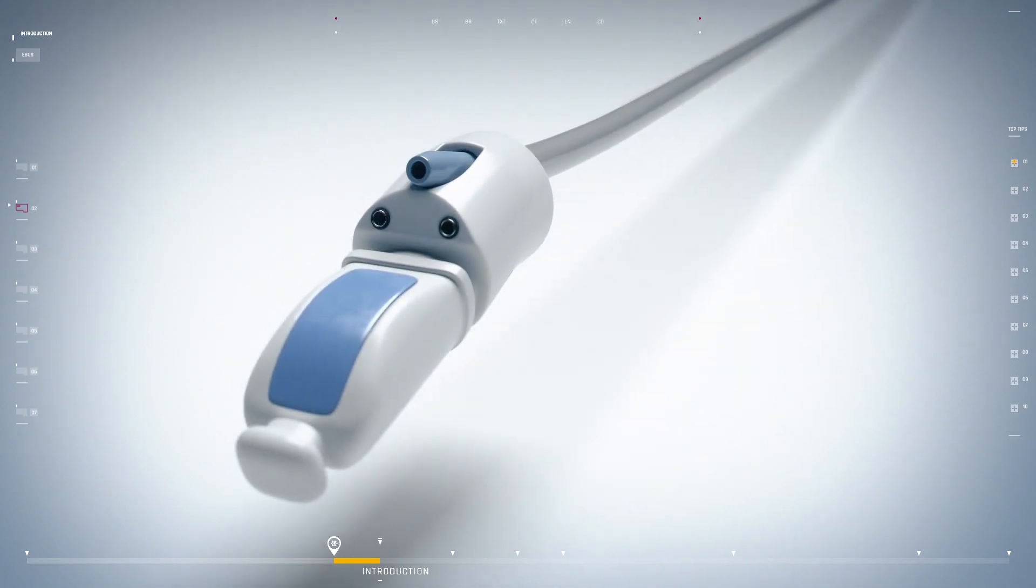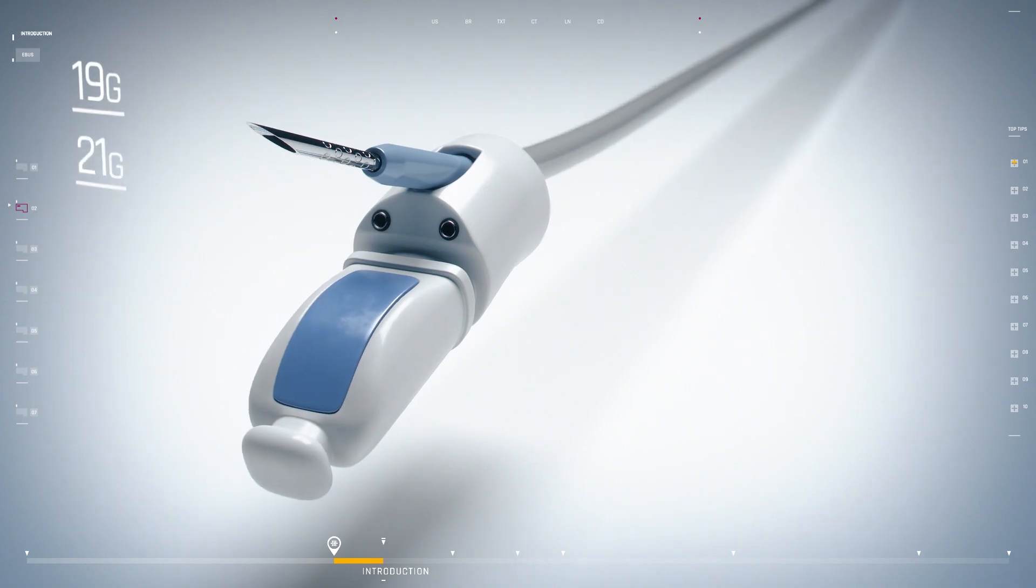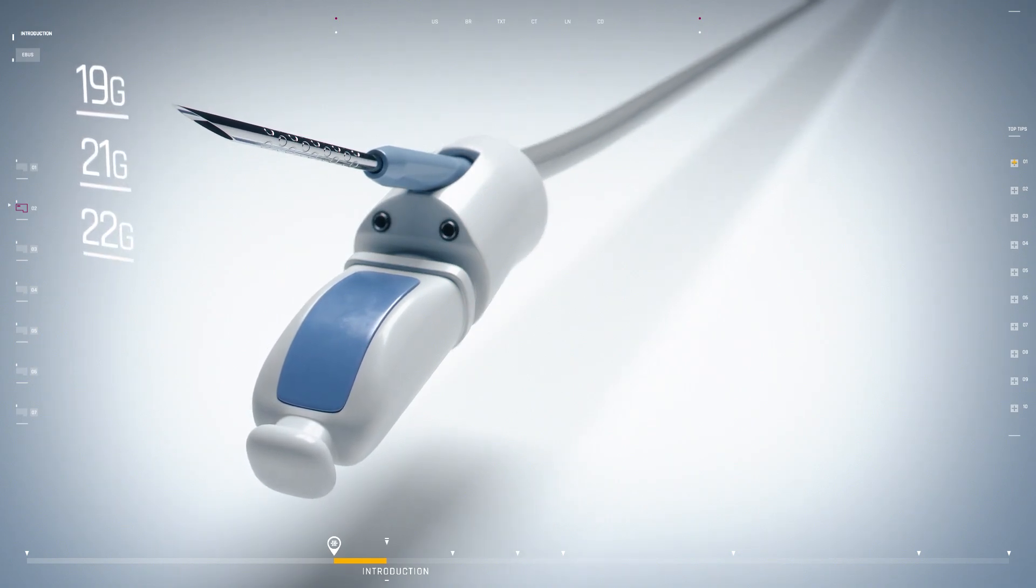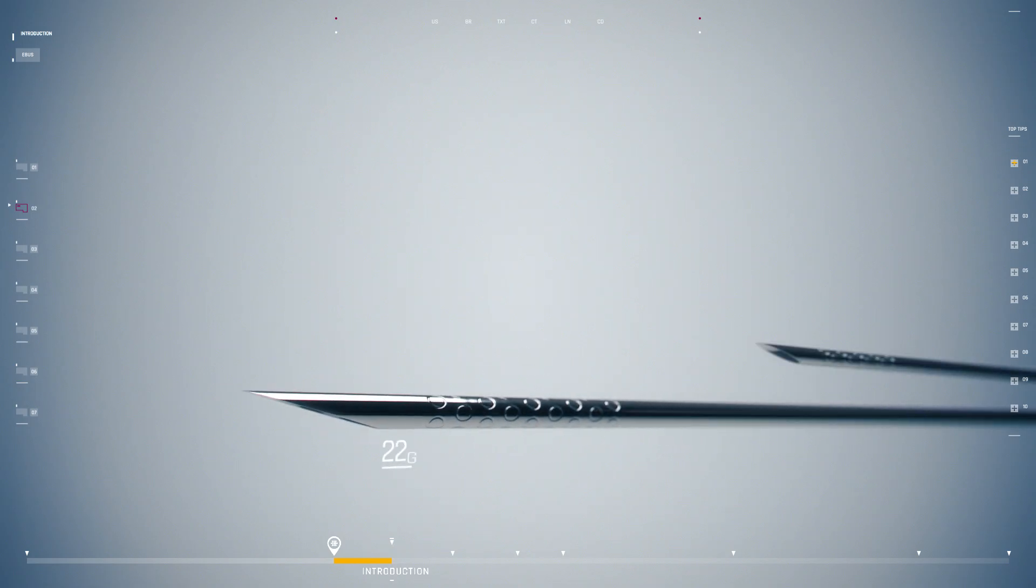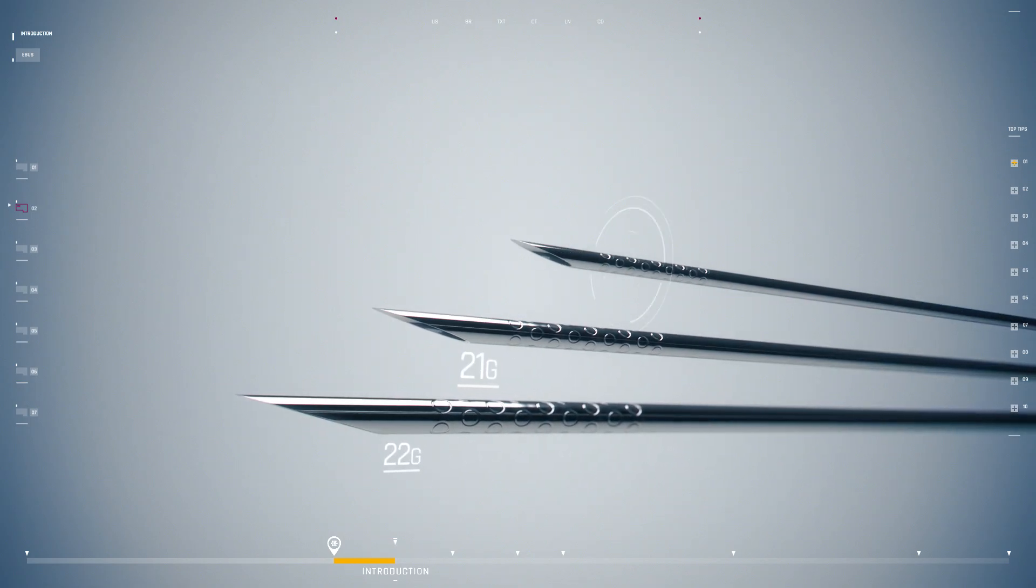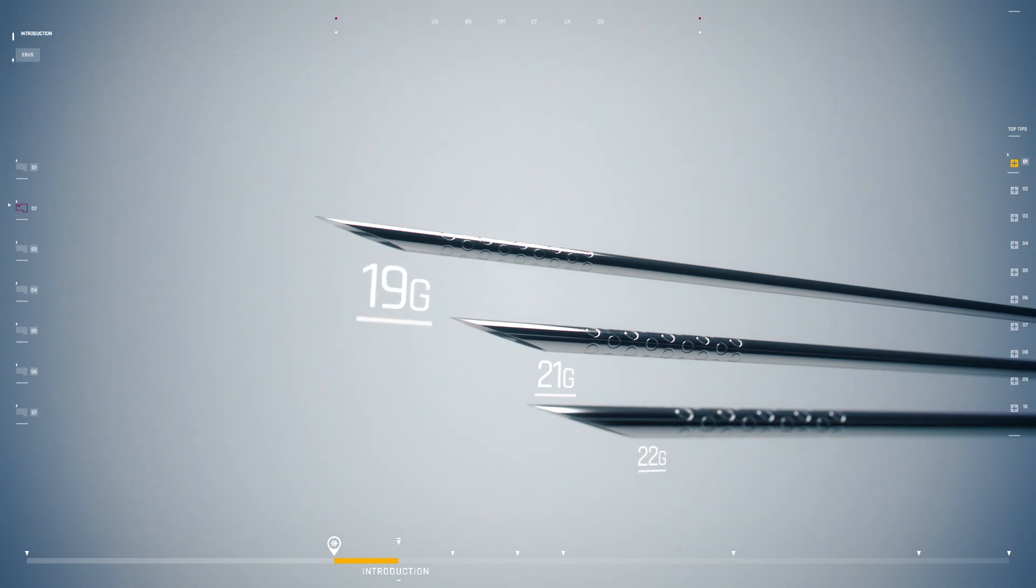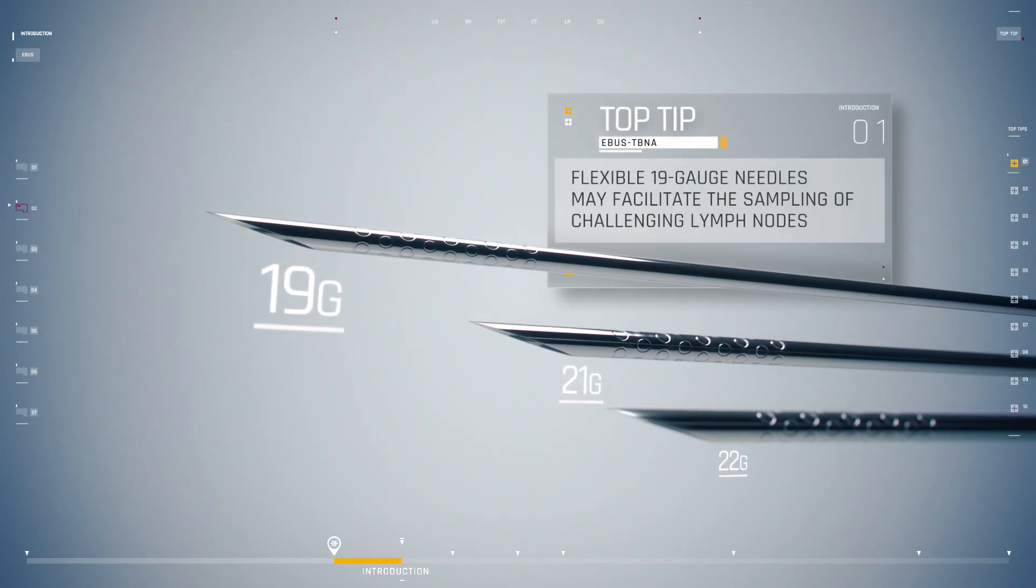The bronchoscope has a working channel that can house a dedicated 19, 21, or 22 gauge needle. Appropriate needle selection will depend on the clinical situation. The 19 gauge needle may be more flexible than other needles and can provide better access to more challenging areas such as station 4L and hilar lymph nodes.